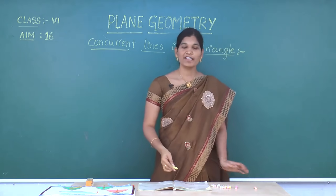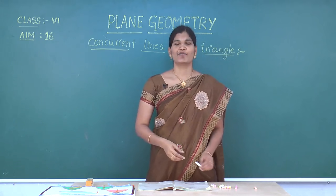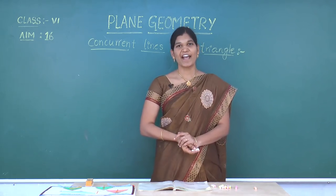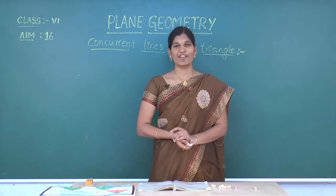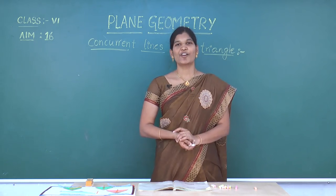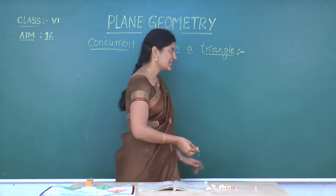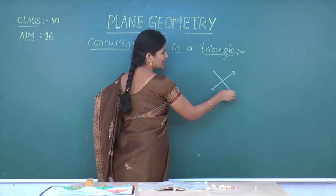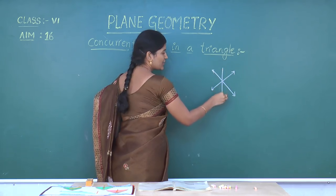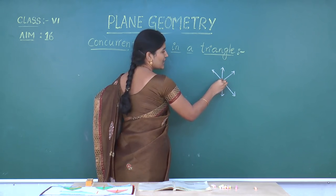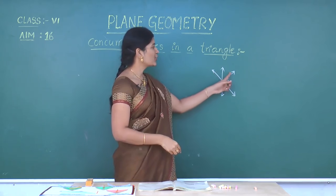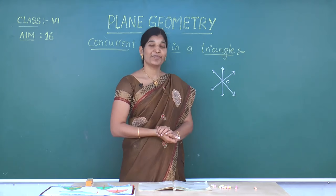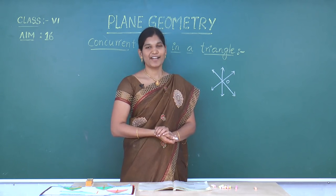In the previous aim, we already discussed about concurrent lines. What is meant by concurrent lines? Three or more lines having the same common point, then we will call them as concurrent lines. Three or more lines passing through the same point, then we can say those lines are concurrent lines. Let us see the concurrent lines in a triangle.